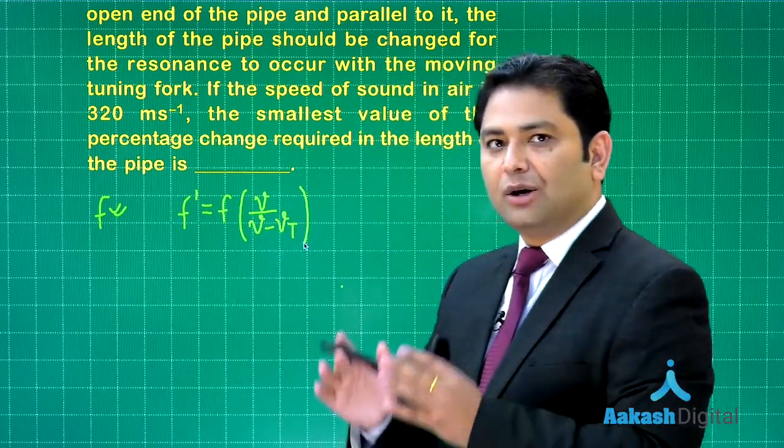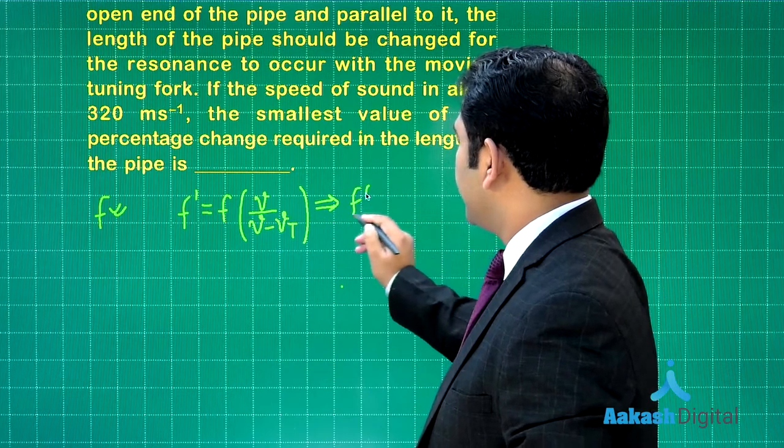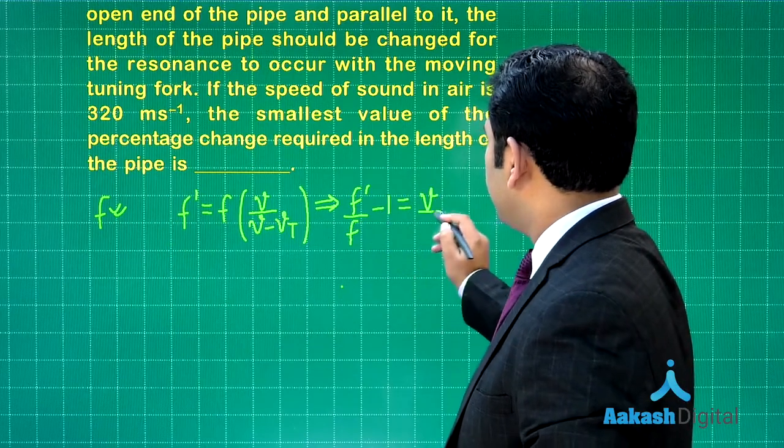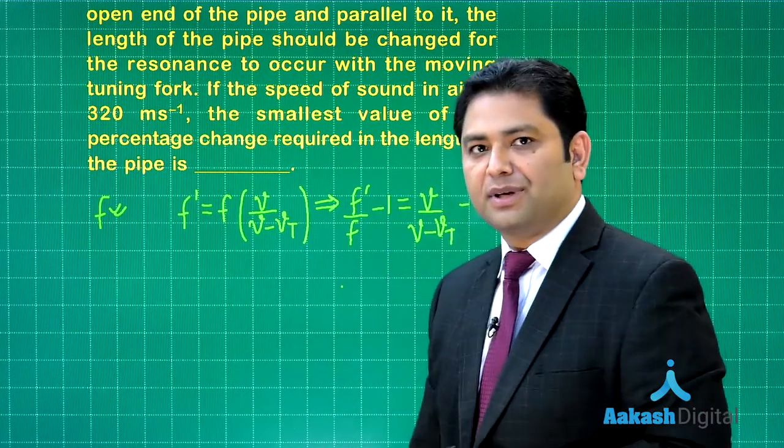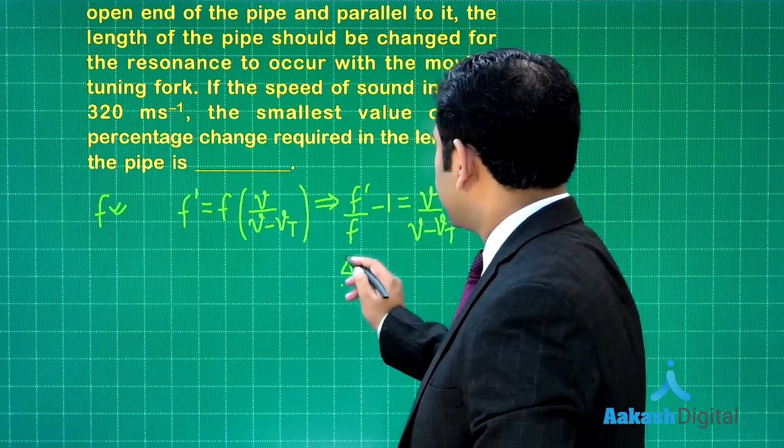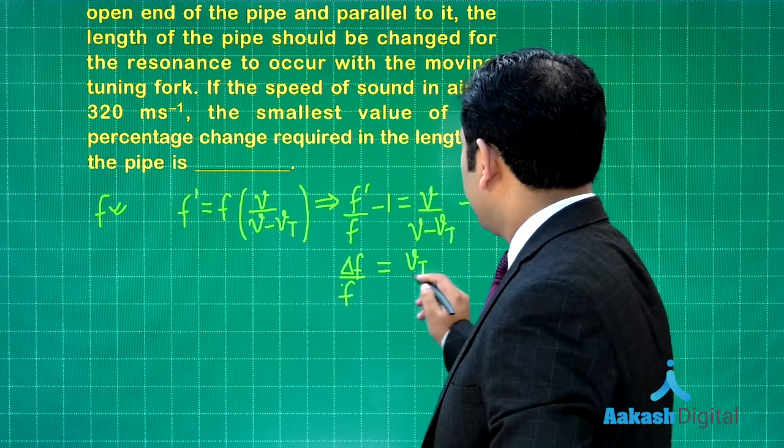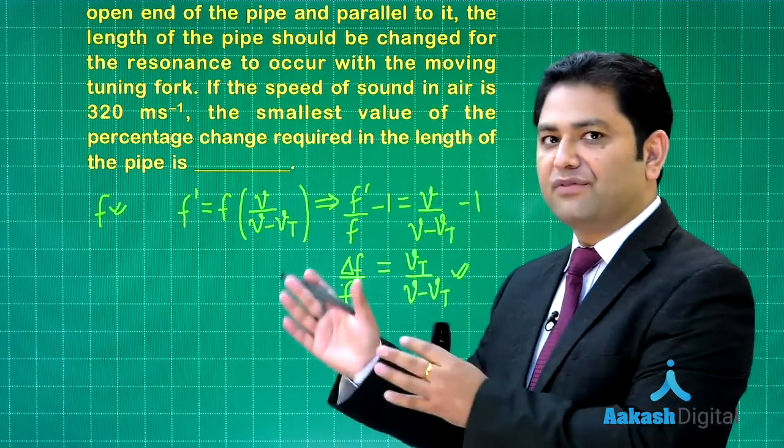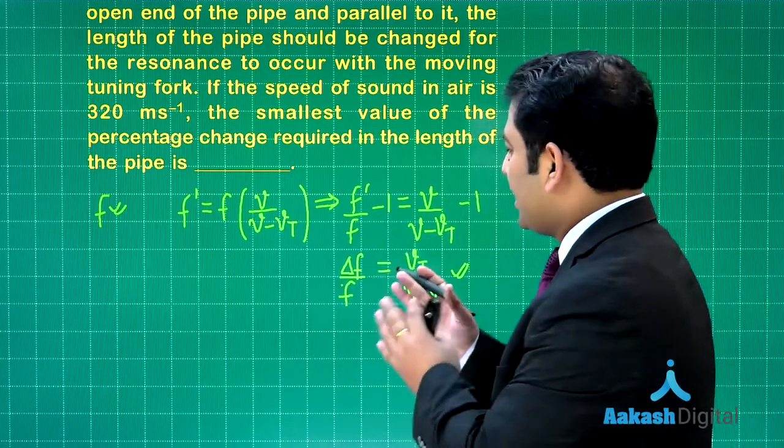Let's see what is the percentage change in frequency. f' by f, I'll bring it there and subtract by 1. This is going to be v by (v minus v_t) minus 1. If you realize, f' minus f by f is itself the fractional change in frequency, and that will equal v_t by (v minus v_t). This can be easily calculated given the value of v and v_t both.